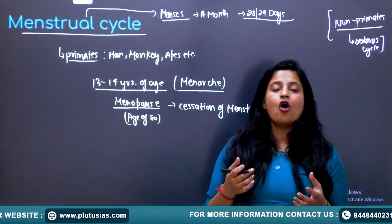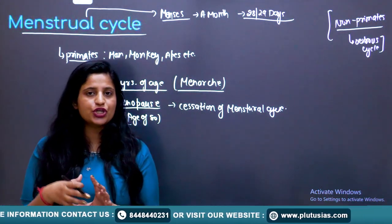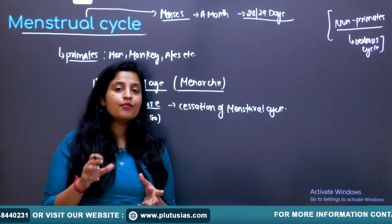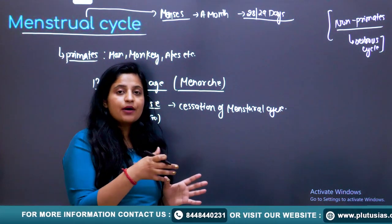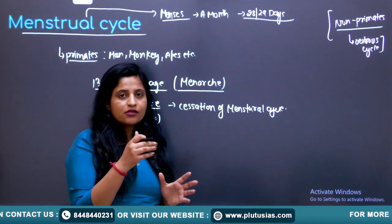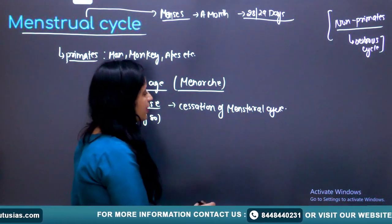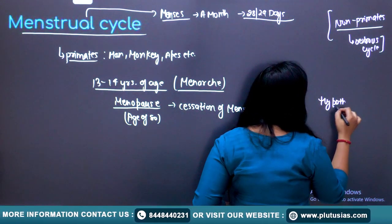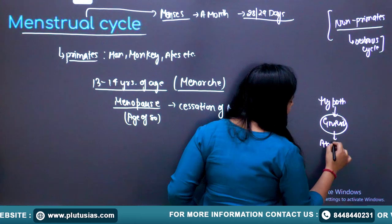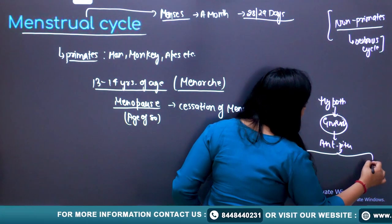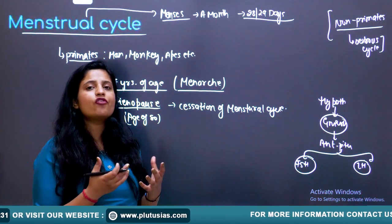During puberty, hormone levels change in the body. When a girl was in her mother's womb, oogenesis had started but was at a halt. When the girl reaches puberty, the hypothalamus releases gonadotropin-releasing hormone (GnRH), which stimulates the anterior pituitary. The anterior pituitary then releases two types of hormones: FSH (follicle-stimulating hormone), responsible for the growth of follicles, and LH (luteinizing hormone).